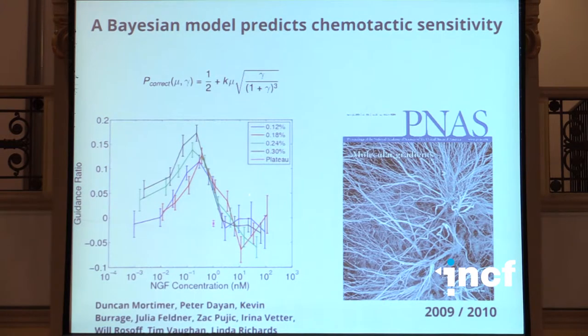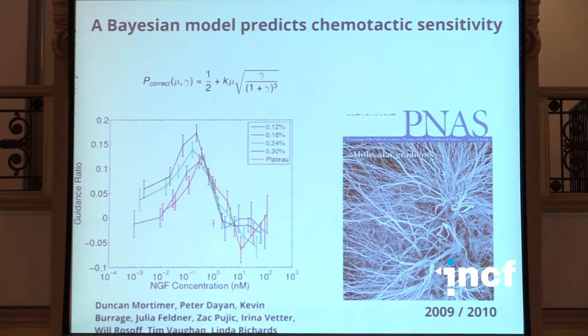The experimental data was generated by several people in the lab in collaboration with the lab of Linda Richards. You can see that, at least qualitatively, the shape of these curves matches quite well with the predictions of the Bayesian ideal observer model. You can make more quantitative comparisons to show it's a pretty good fit. Essentially, when you plot the experimental versus theoretical data, apart from the scaling constant, all we're doing is fitting the dissociation constant — which turned out to be the same as what's measured experimentally using more standard techniques.